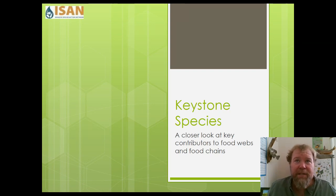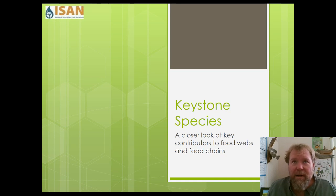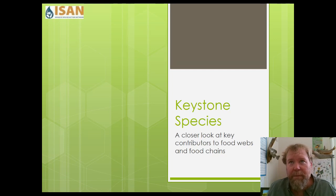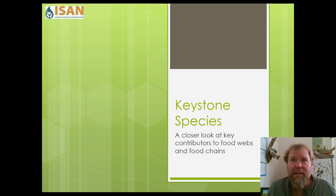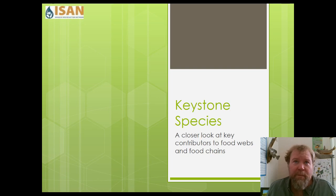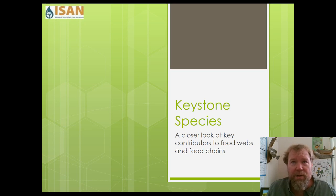Keystone species are very unique because they're crucial to the functioning of ecosystems. They affect entire communities of birds, plants, animals, fish, reptiles, and amphibians. Without keystone species, ecosystems would totally change or disappear altogether. If a keystone species were to disappear, no other organism could take its place or be a substitute within that ecosystem to fill its very specific role.